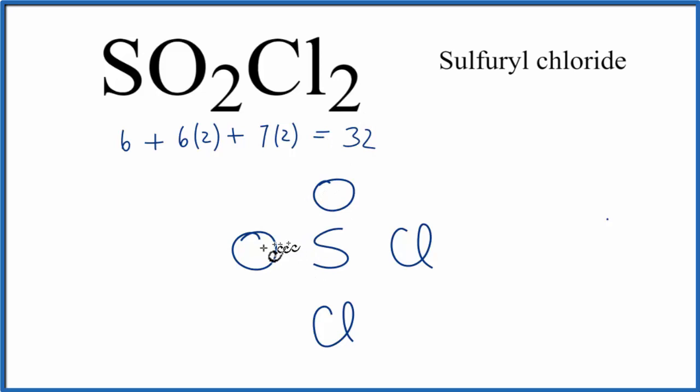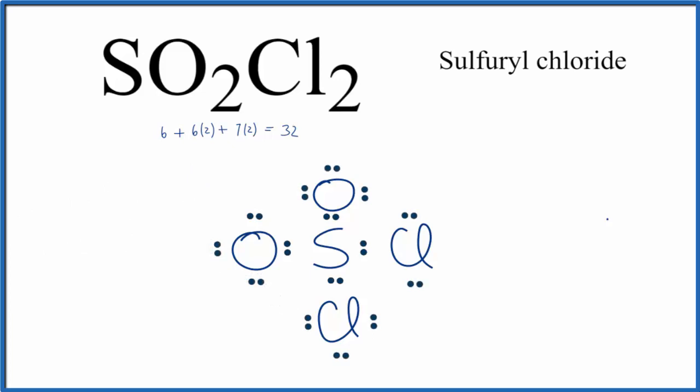We'll first put valence electrons between these atoms, and that'll form the chemical bonds. So we'll put some here, and here. Next, we'll complete the octets around each of these atoms until we use the 32 valence electrons. So we've used 30, and then we'll put our last two over here, 32.